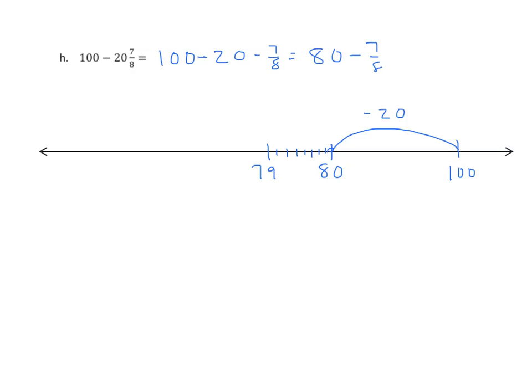I'm going to go down 7 eighths. 1, 2, 3, 4, 5, 6, 7. Okay. I could have just done that in one hop as well. Minus 7 eighths. Both are acceptable. And if I look there, I see that my whole number is 79. We know that this number here on the number line is between 79 and 80. We'll go with the lower value, 79. And then we go up to 79 and 1 eighth.